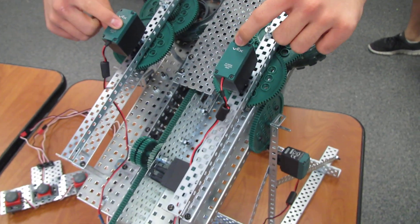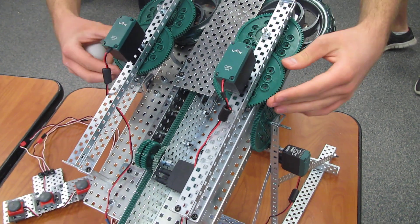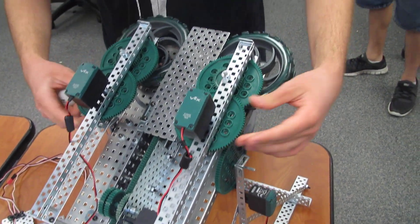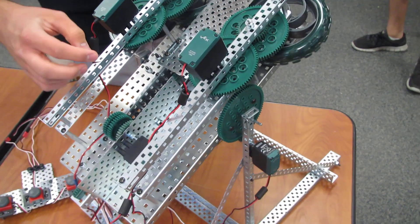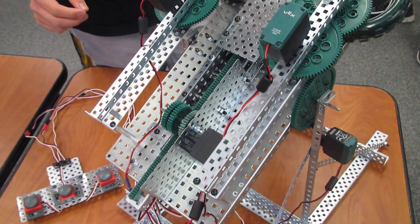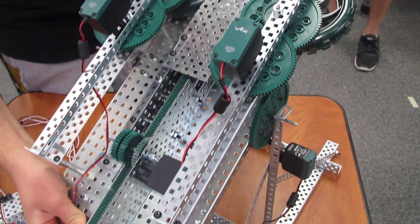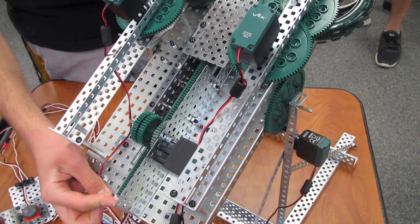We have two large VEX 393 motors that are geared up to a really high ratio to spin these motors. The actual ball goes in here. You've got to feed it in through there, and then a track pushes it in like so.